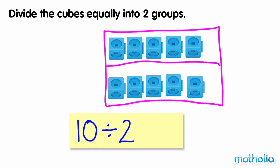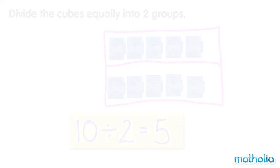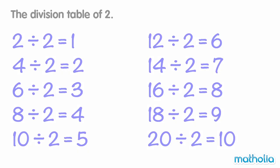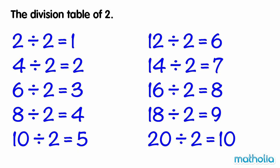There are five cubes in each group, so ten divided by two equals five. The division table of two.